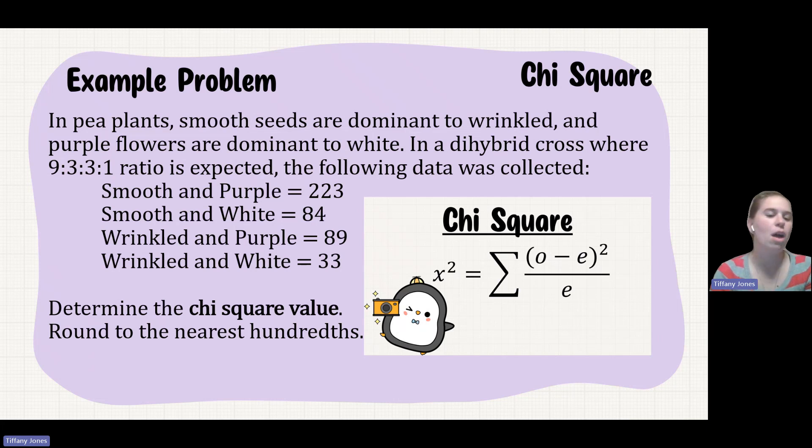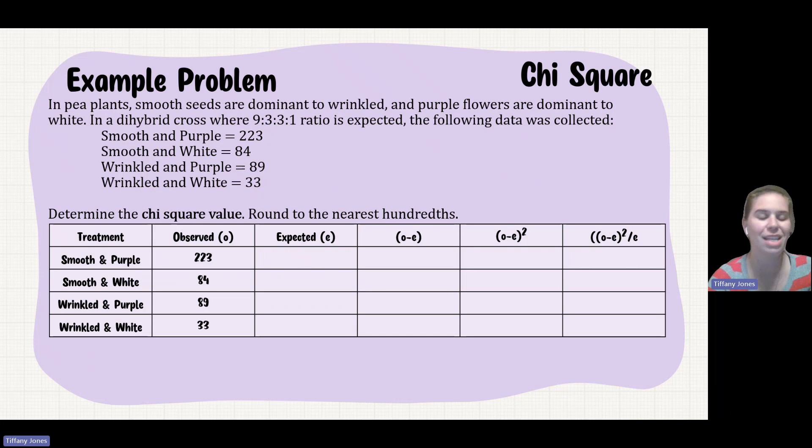So they tell us how many are smooth purple, smooth white, wrinkled and purple, wrinkled and white. And they want us to get a chi-square value and then give it to the nearest hundredth. So I'm going to do it with the table method just because it makes more sense to my brain.